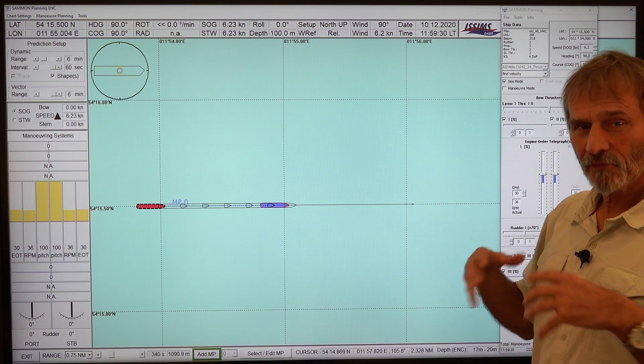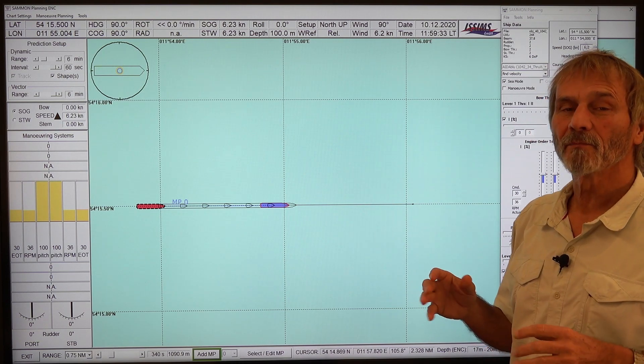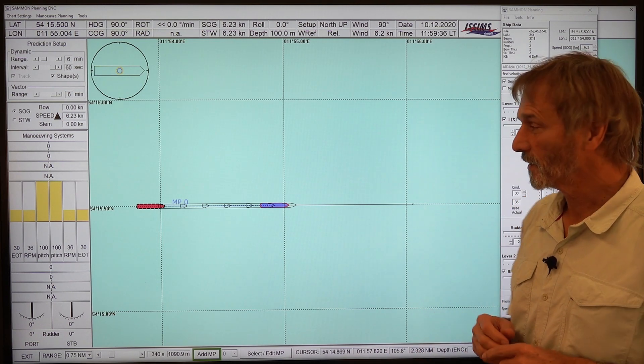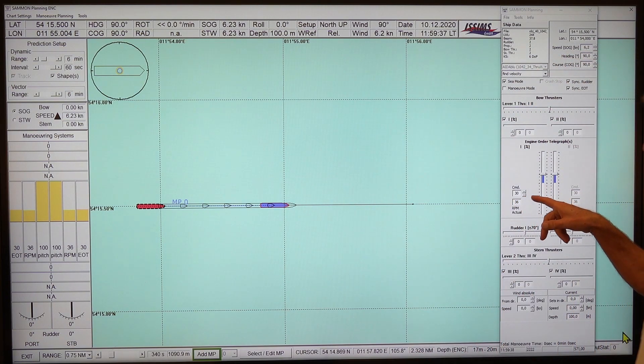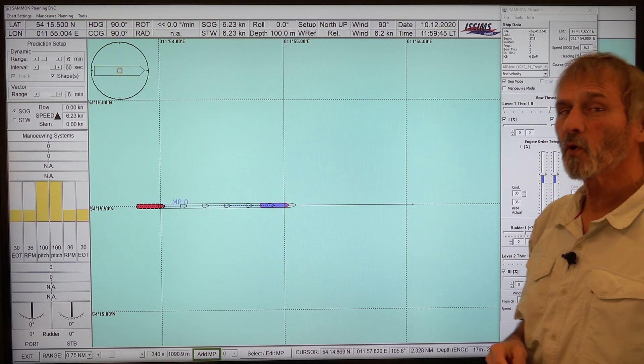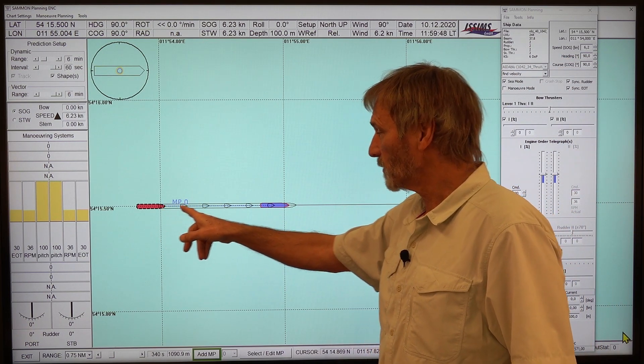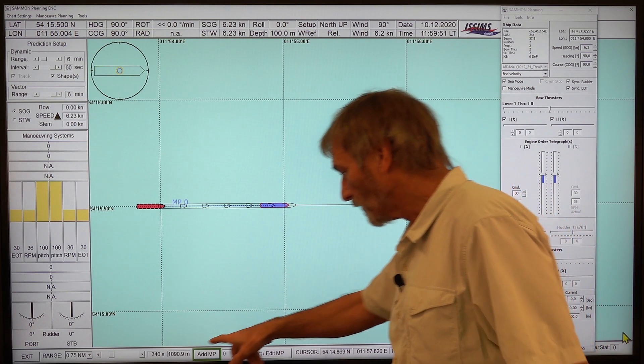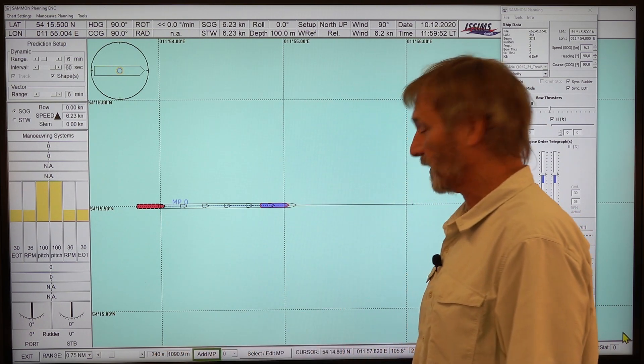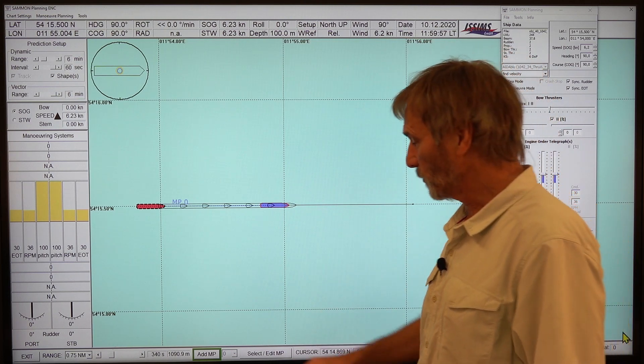But at first I would like to establish some reference maneuvers. So for the time being the engines are set to 30% ahead, which is coming to a speed of about 6.2 knots. This is the initial position and here the ship would be after 340 seconds. And this will be the position where I start the turning maneuver.